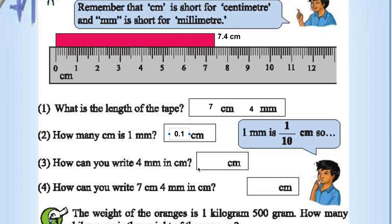How can you write 7 cm and 4 mm in cm? 0.4. 4 by 10. 0.4 cm. How can you write 7 cm and 4 mm in cm? 0.4 cm.